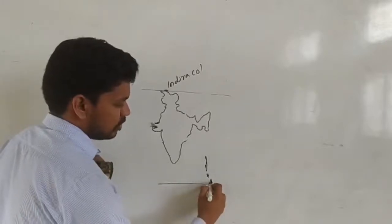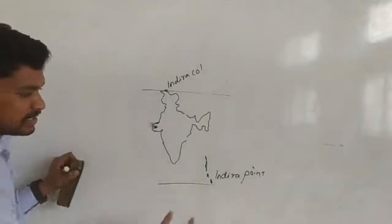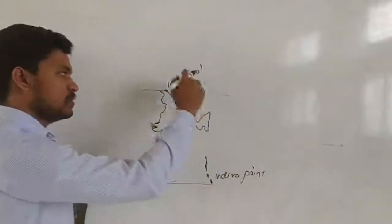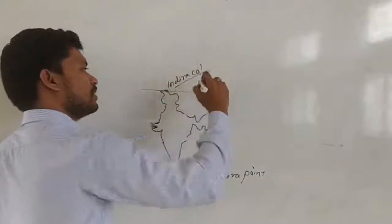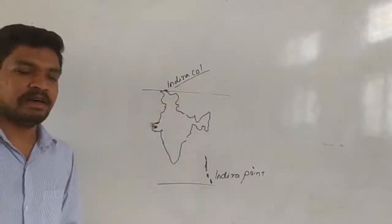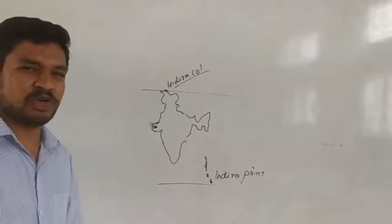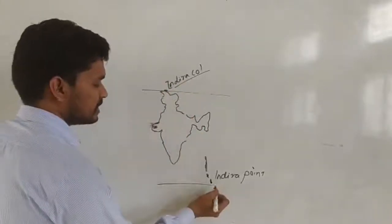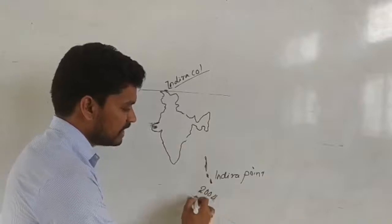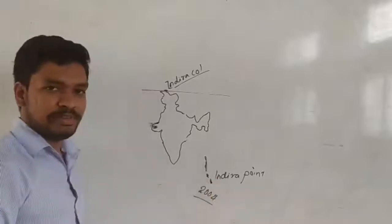The southernmost point is called the Indian landmass. This whole concept: the Indian landmass ends at a triangular point. Although the Indian landmass ends at this point, the Indian frontier also includes the Andaman and Nicobar region. The southernmost point of Indian frontier is called Indira Point. But now we don't calculate Indira Point because in 2004, Indira Point was submerged underwater.